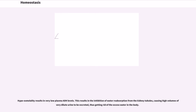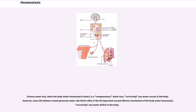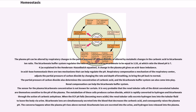Urinary water loss, when the body water homeostat is intact, is a compensatory water loss correcting any water excess in the body. However, since the kidneys cannot generate water, the thirst reflex is the all-important second effector mechanism of the body water homeostat, correcting any water deficit in the body. The plasma pH can be altered by respiratory changes in the partial pressure of carbon dioxide, or altered by metabolic changes in the carbonic acid to bicarbonate ratio.